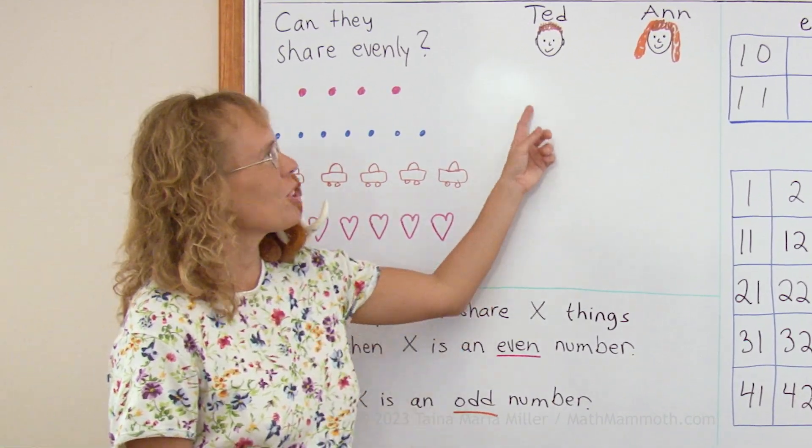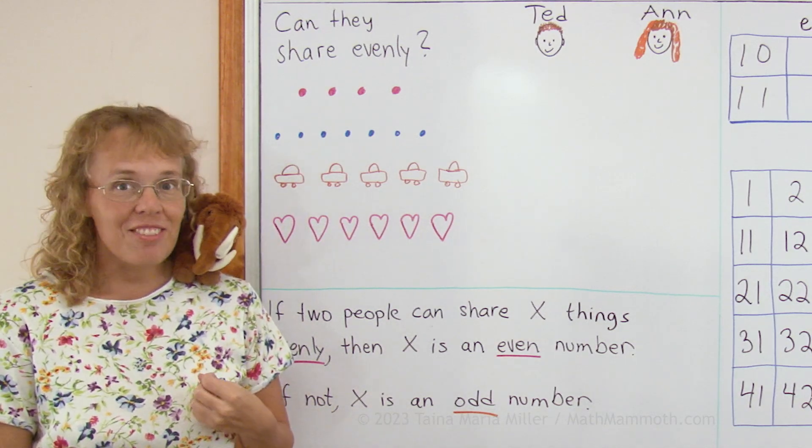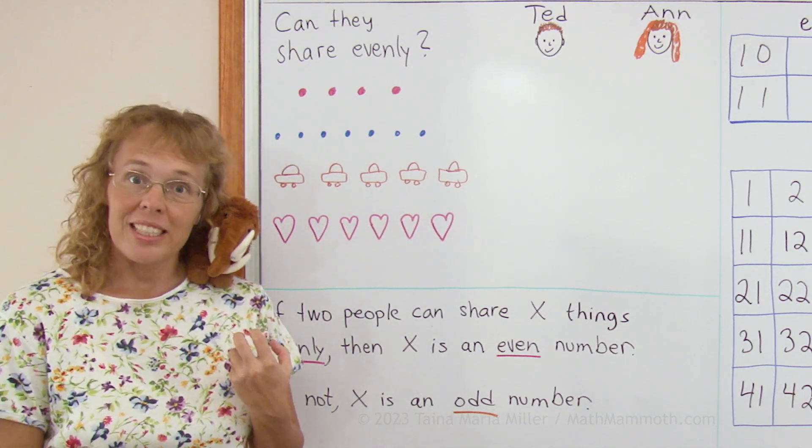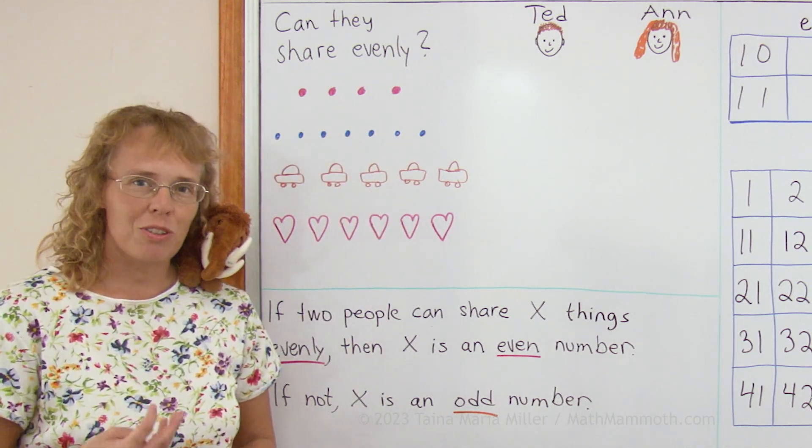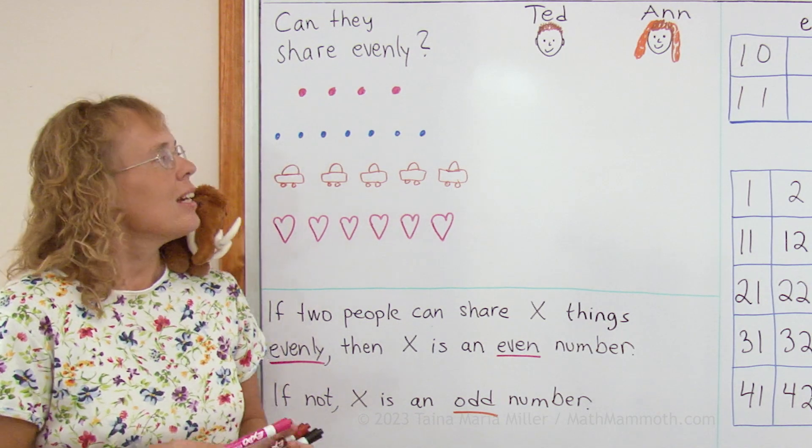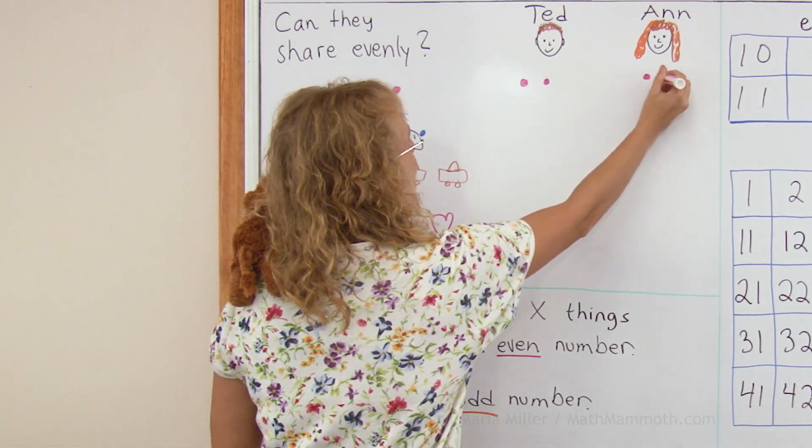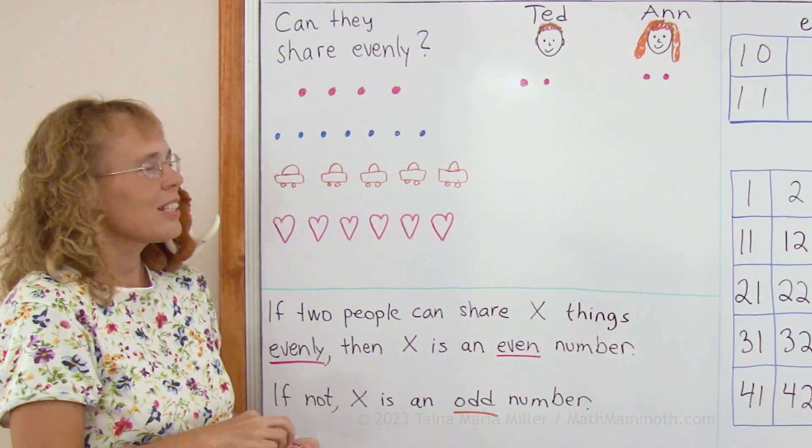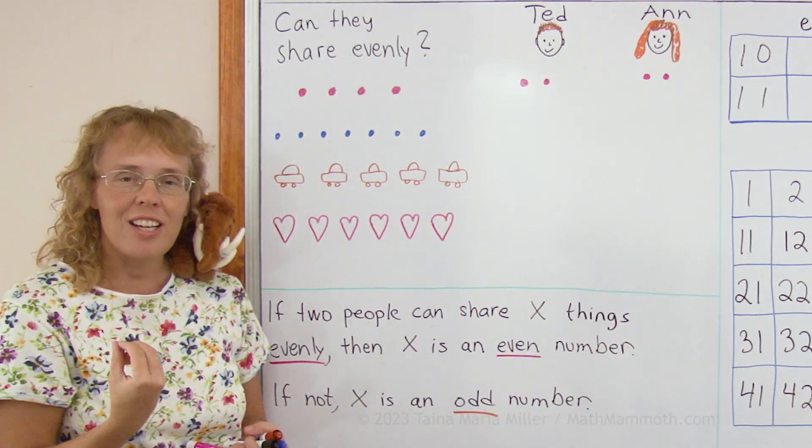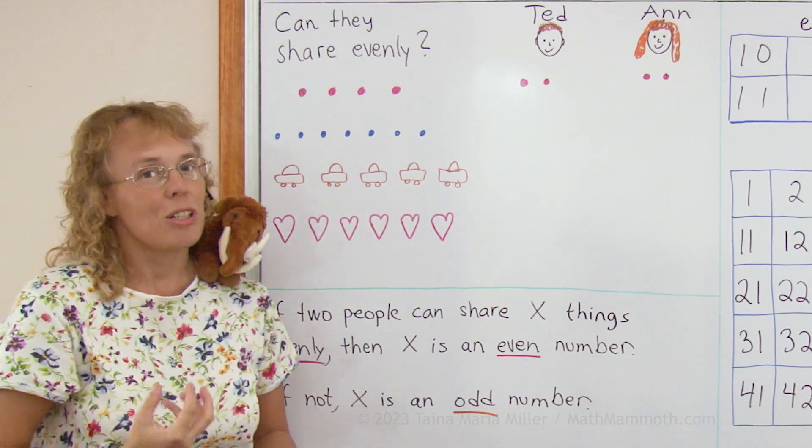Now here we have two children, Ted and Anne, and they're going to try to share certain things evenly so that each one gets the same amount. For example, if we have four raspberries, can they share those four raspberries evenly? Yes, they can, because I can draw two for Ted and two for Anne. See, both get the same amount. So then we say that four is an even number, because four things can be shared evenly when you have two people sharing.